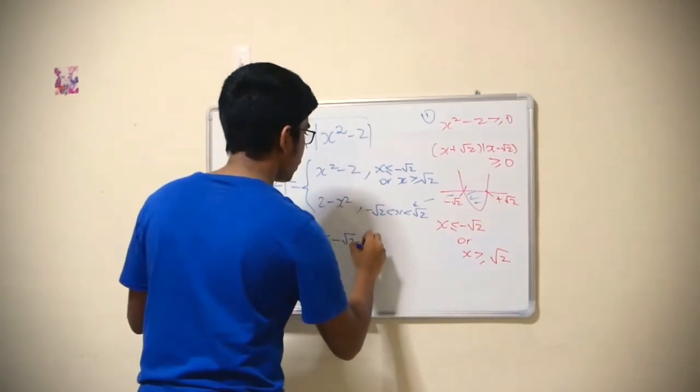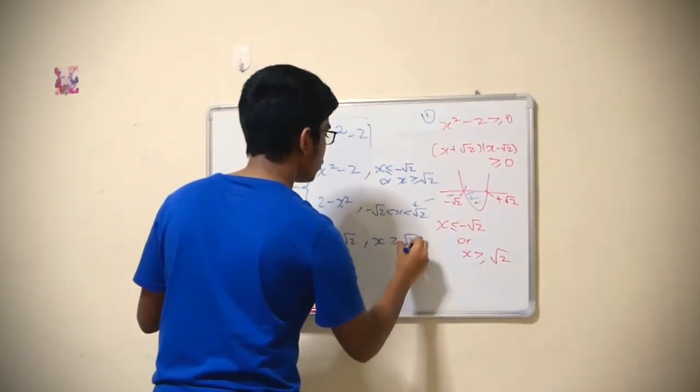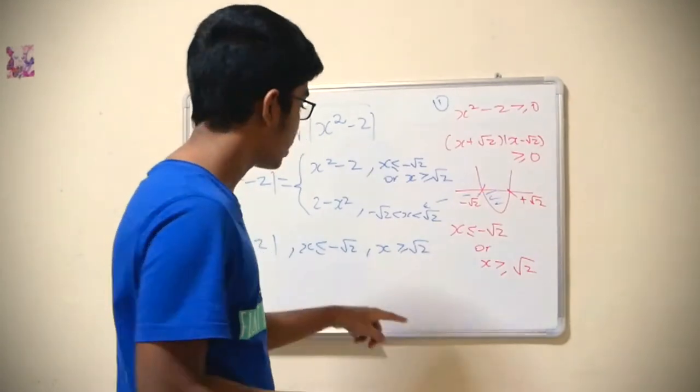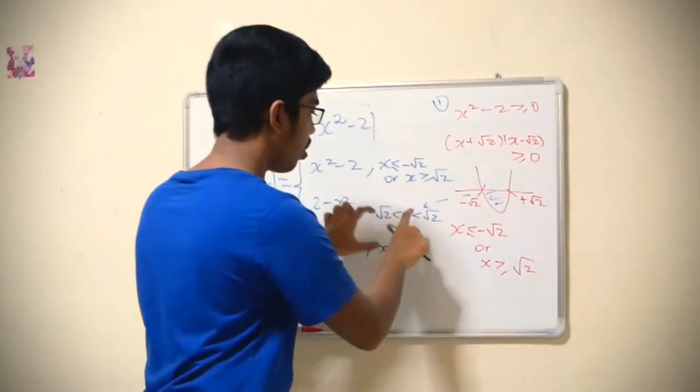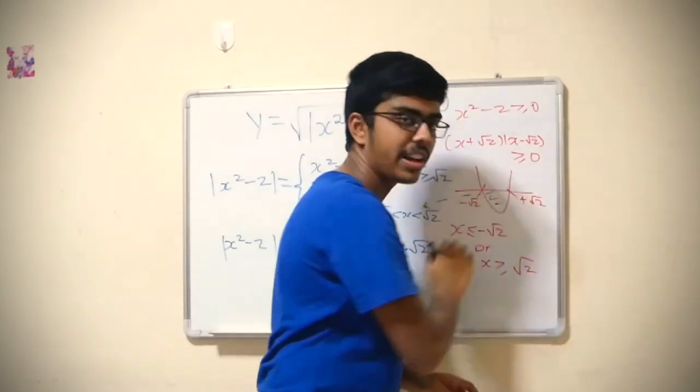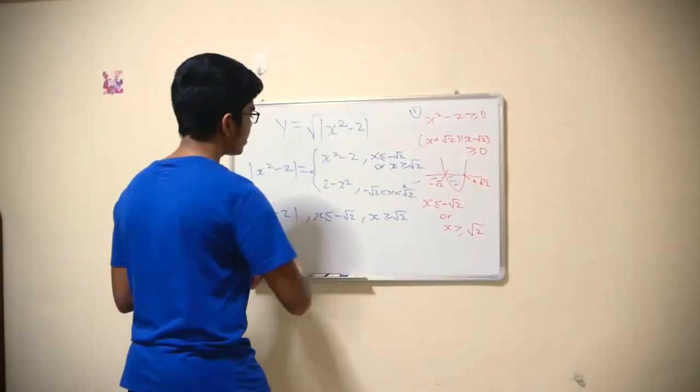...or x greater than root 2, this is not a one-to-one function. It has to be either this one or this one, or else the graph would cut twice and it won't be one-to-one.